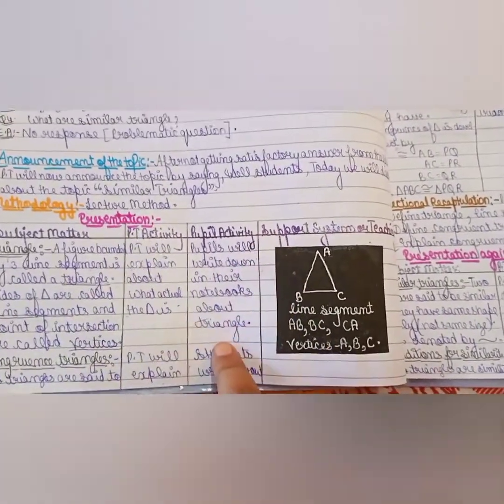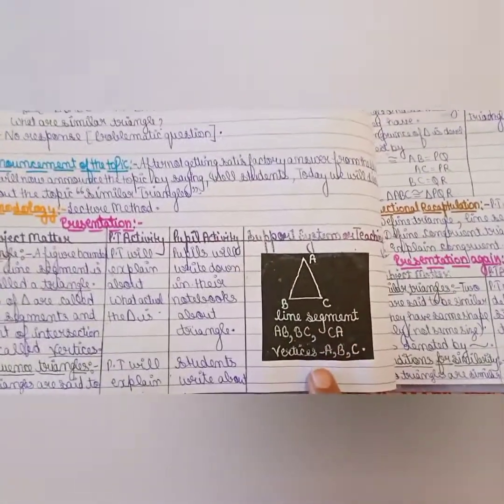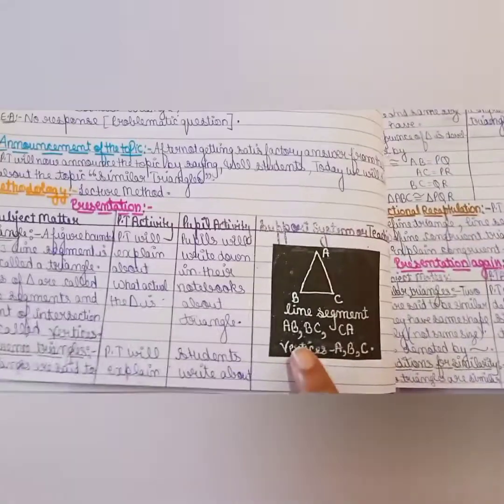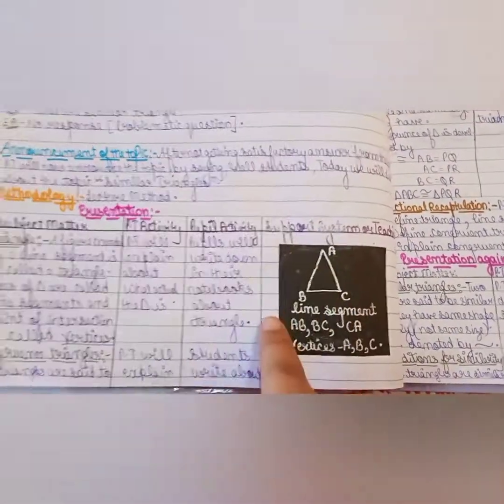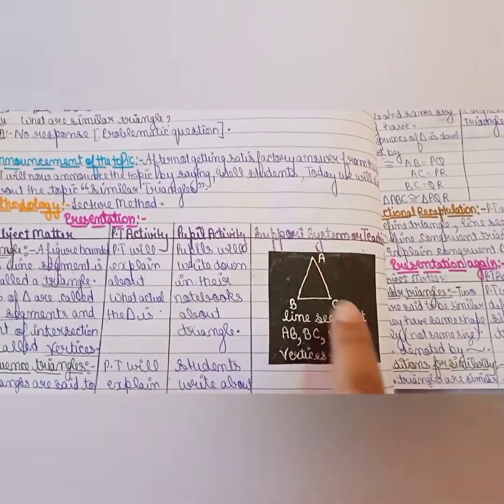So PT will explain about what actually the triangle is. Pupil activity: they will note down. PT will use blackboard which will tell the triangle. Line segments which are lines are called A, B, C and vertices are called A, B, C.